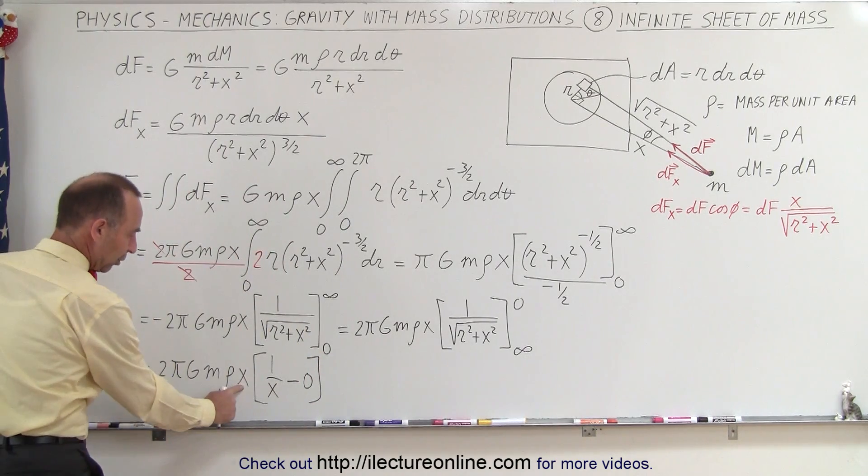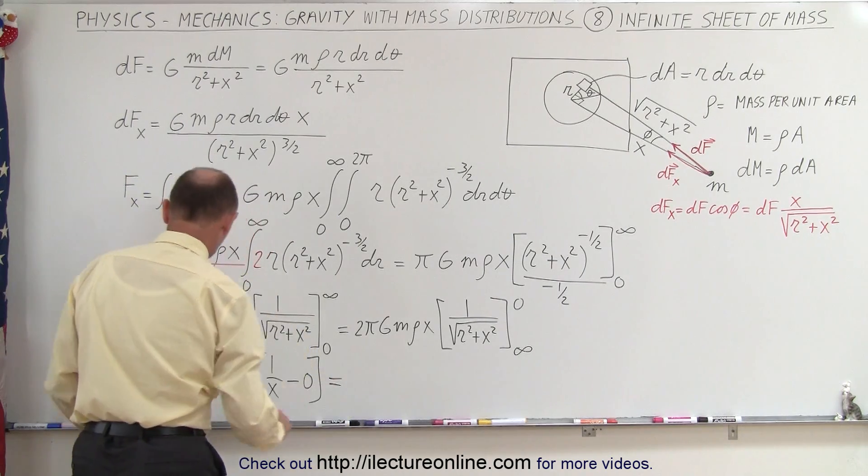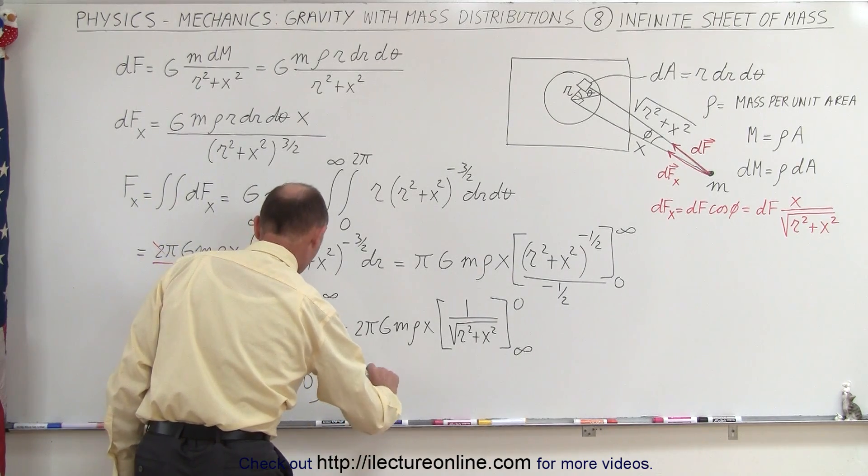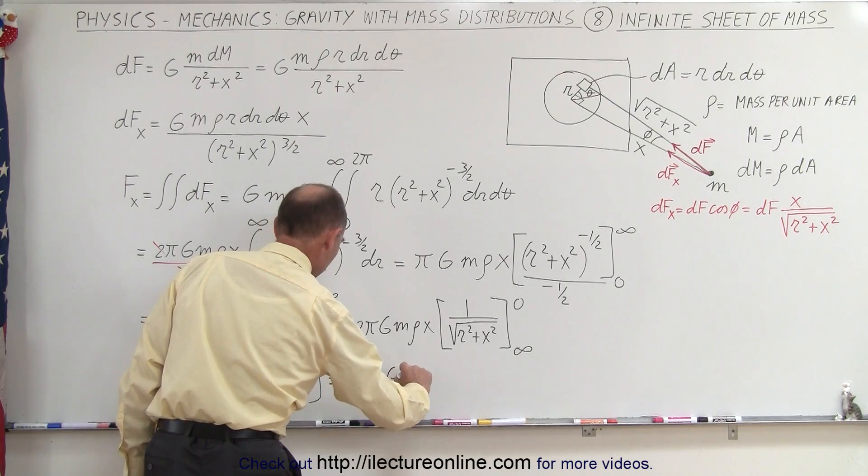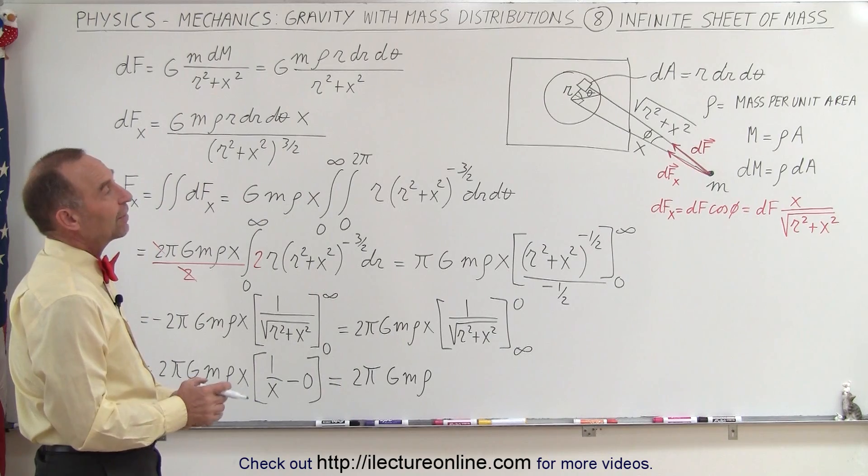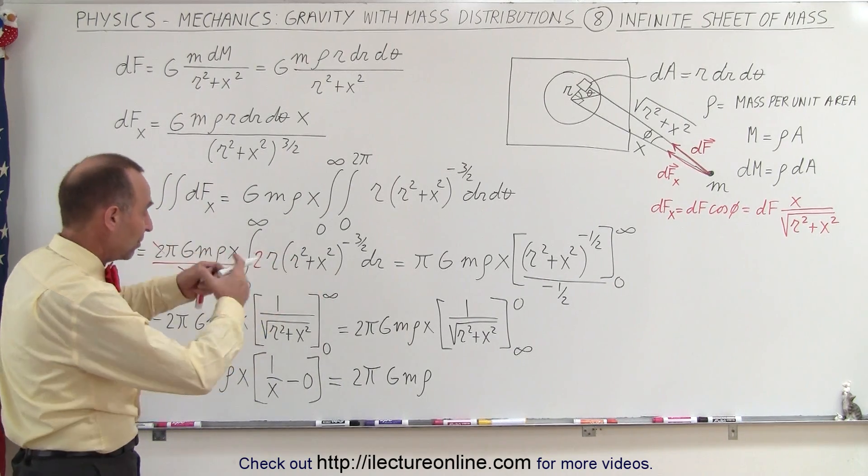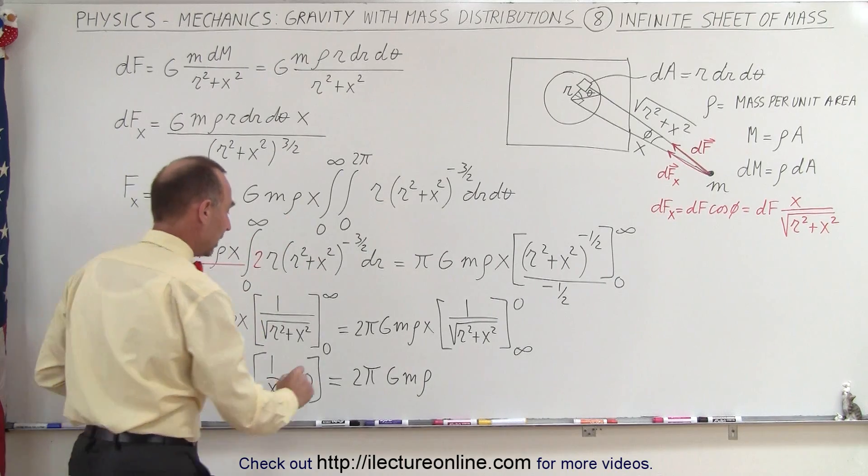And now we realize that we have an x in the numerator, an x in the denominator, they cancel out. So this becomes equal to 2 pi g m times the density. Now the density, we're going to leave it as is because we can't take the total mass of the whole sheet because the sheet is infinite. So I think this is good.